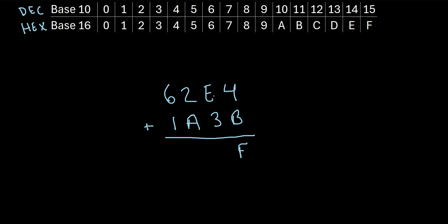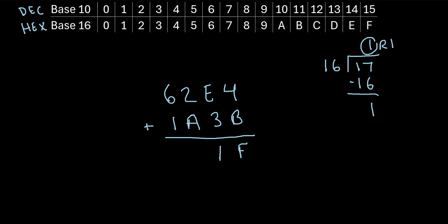Moving on to the next column, we have E plus 3. E is the same as 14. So we have 14 plus 3, which is 17. But the hexadecimal system doesn't go up to 17. So we use our trick: how many 16s go into 17? Just 1. So 1 times 16 is 16. Then 17 minus 16 is 1, so our remainder is 1. We write the remainder right here, and the whole number 1 goes on top of the next column.